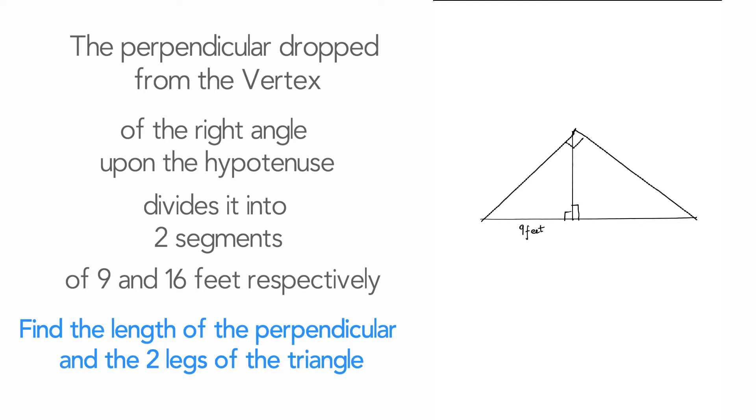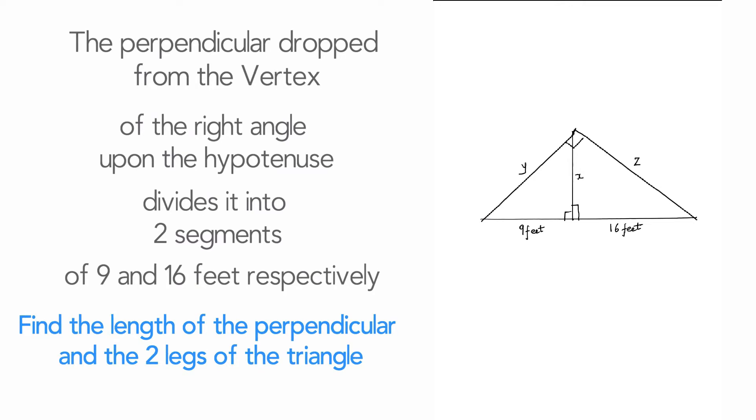And let's put in the right angles where they exist. So we have three out here. And as you can see, these two segments are 9 feet and 16 feet respectively. And I'm going to use x, y and z. These are the unknowns that we need to calculate.